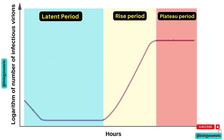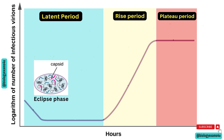The eclipse phase occurs immediately after the phage enters the host cell. During this time, the phage will be actively replicating its genetic material and synthesizing proteins, but no complete virions are formed. This phase typically lasts for a few minutes to several hours, depending on the phage.